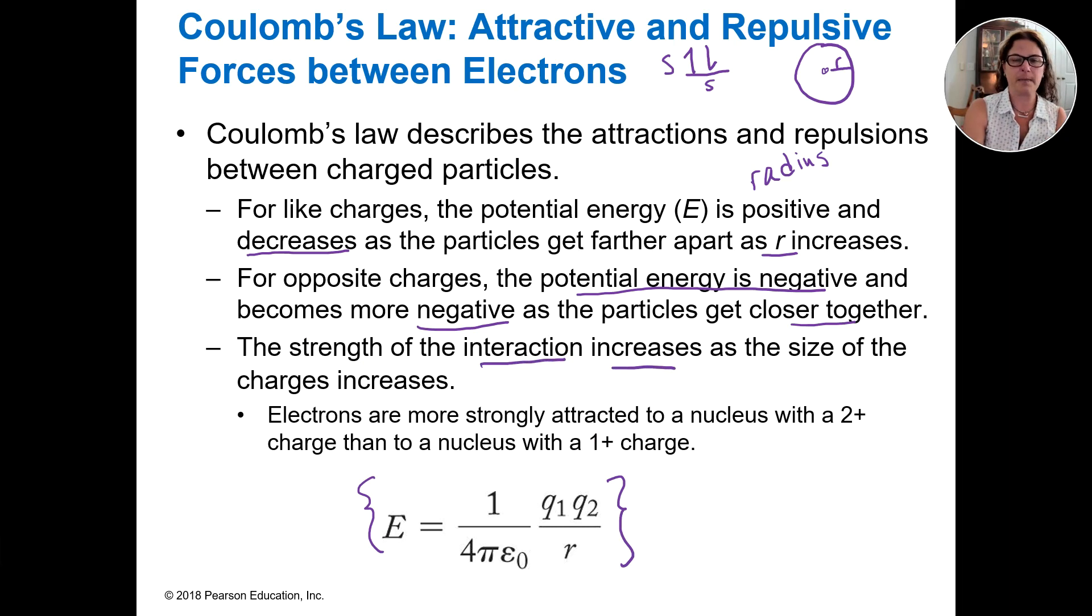The strength of the interaction increases as the size of the charge increases. So what do we really mean by this? The long and short and the takeaway is this right here. Electrons are more strongly attracted to a nucleus with a 2 plus charge than a nucleus with a 1 plus charge. So what do we mean by that? So if I have a nucleus that has two positively charged protons, the electron surrounding it is going to be more strongly attracted to those two positive charges, as opposed to if I have just one positively charged proton and one electron. That's actually going to kind of negate itself and be neutral.